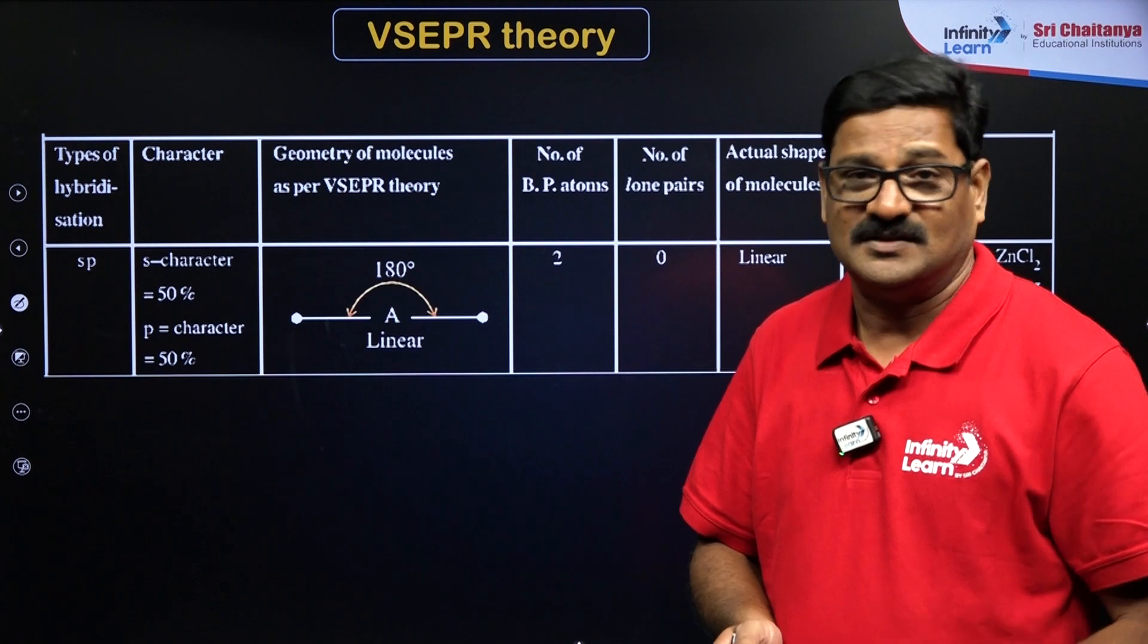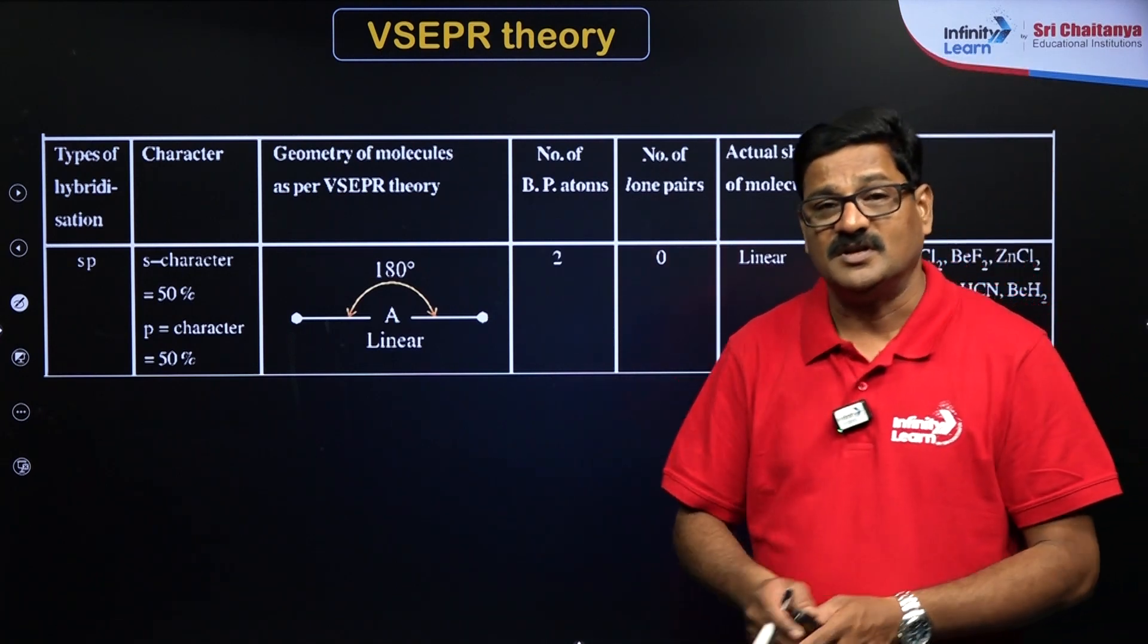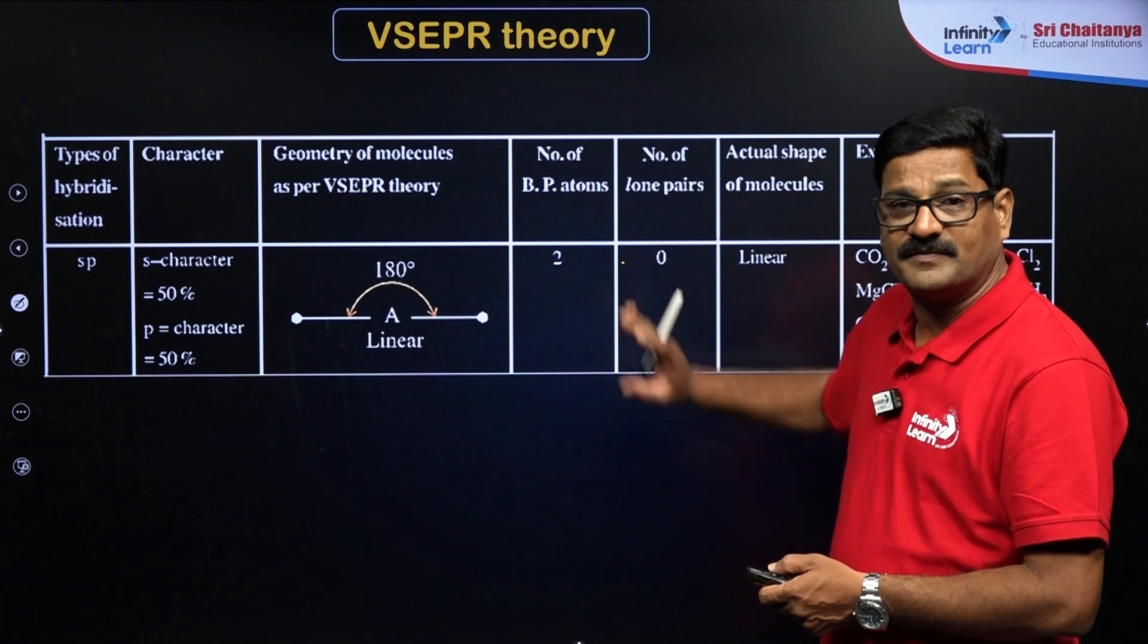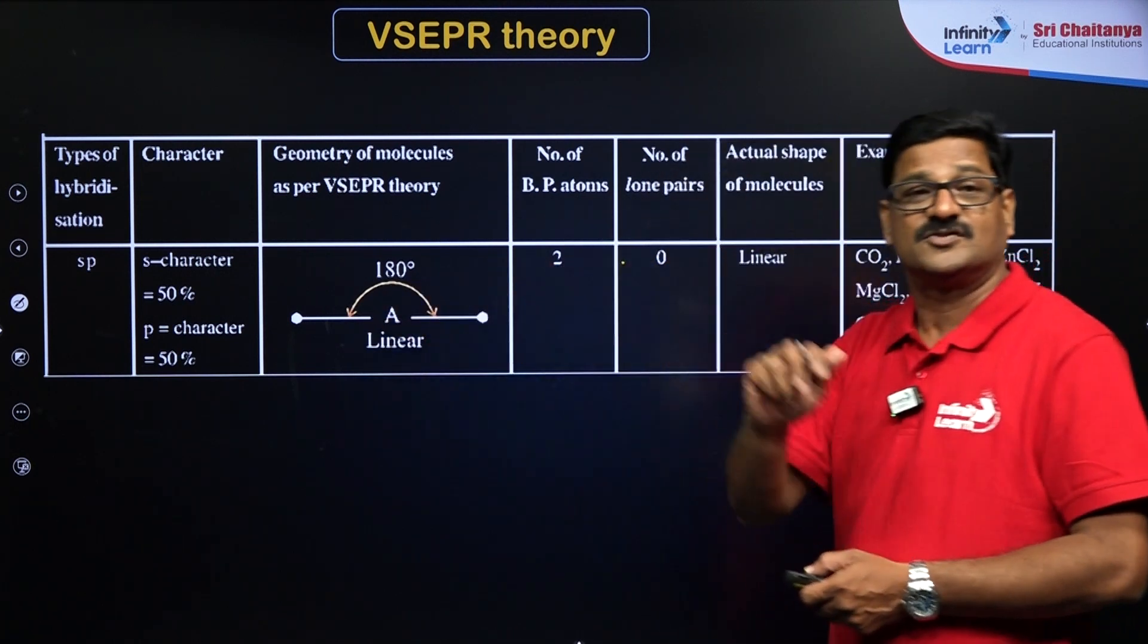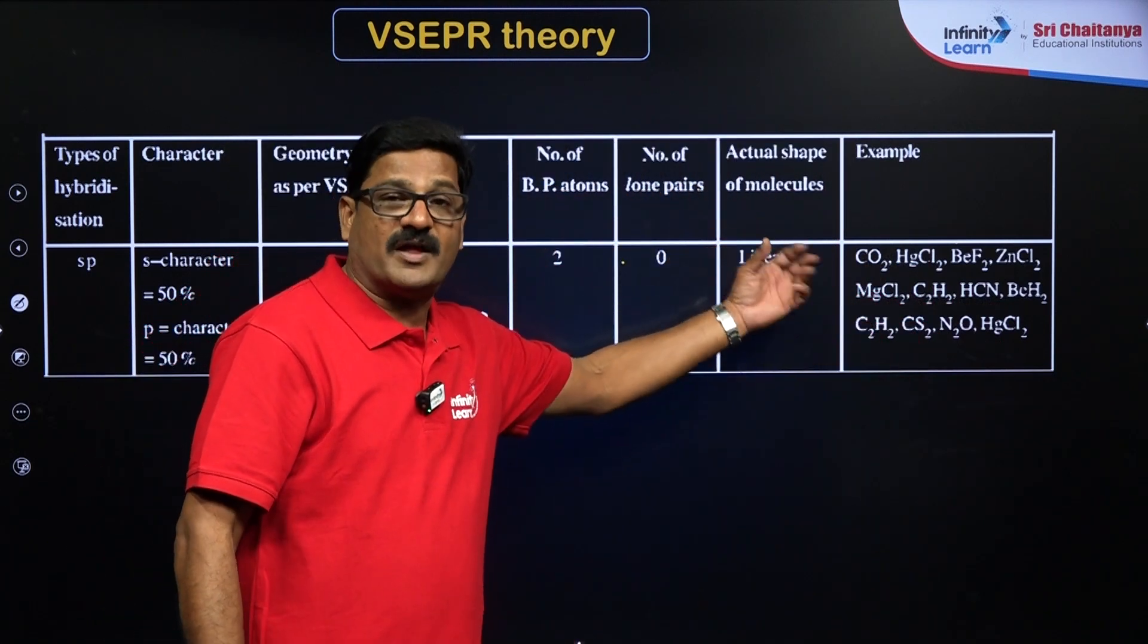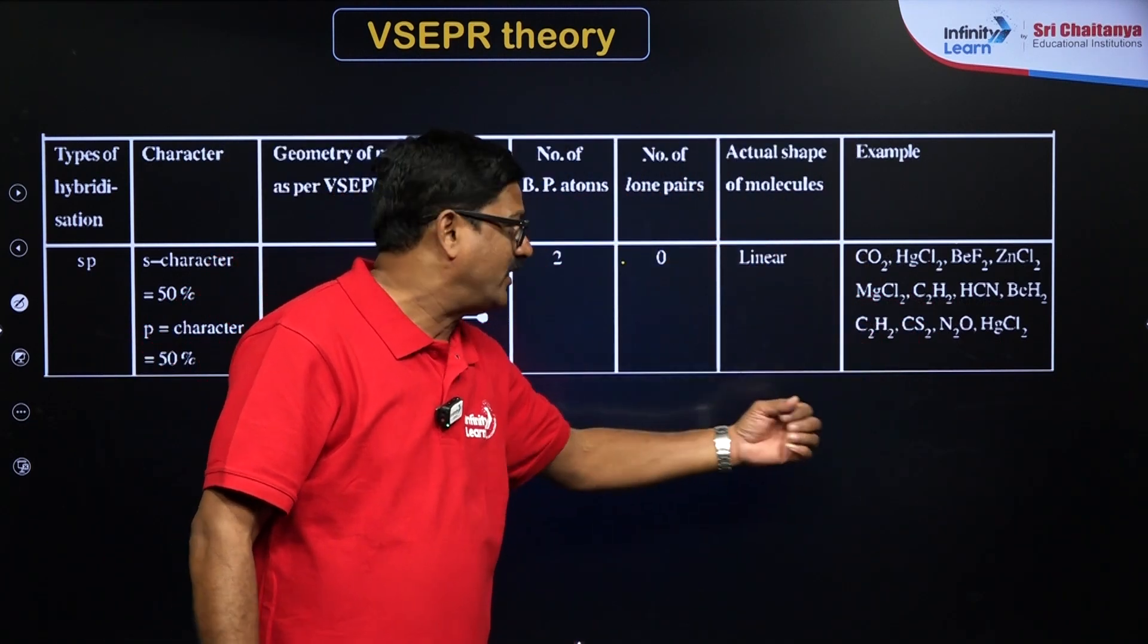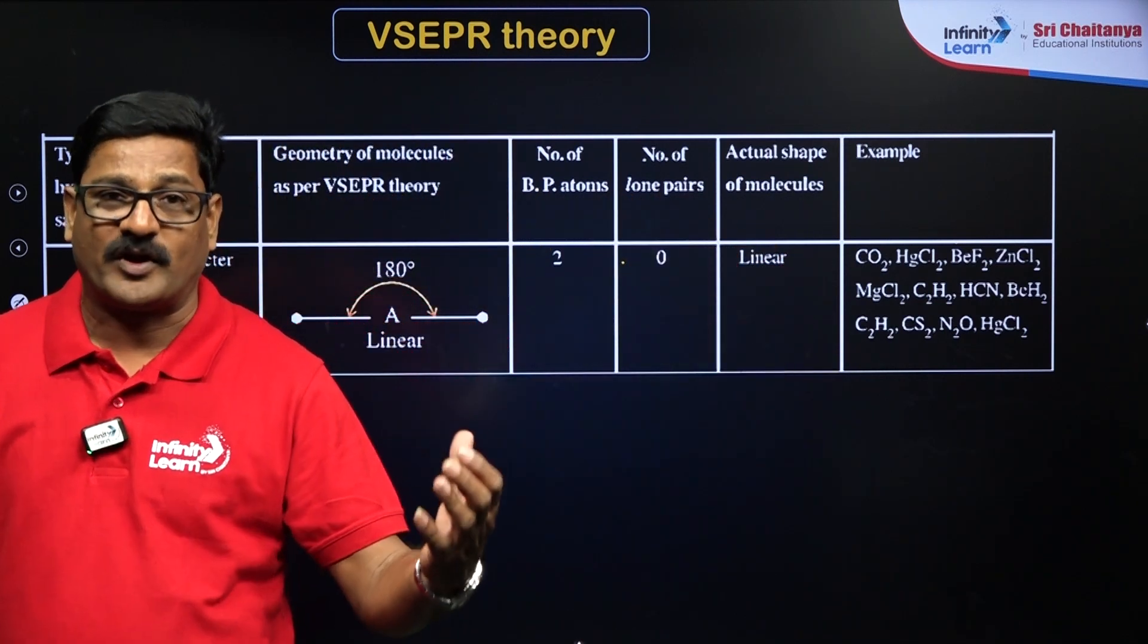If it has lone pairs of electrons, it is going to have irregular geometry. As this does not have the lone pair of electrons, it would have linear geometry like A-B-B. It is linear, so 180-degree angle is seen. The best examples are carbon dioxide, beryllium chloride, ethylene, zinc chloride, beryllium fluoride.